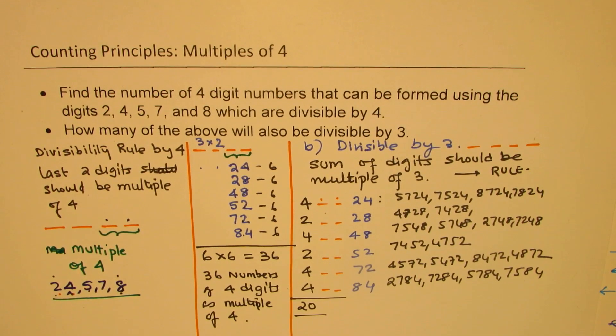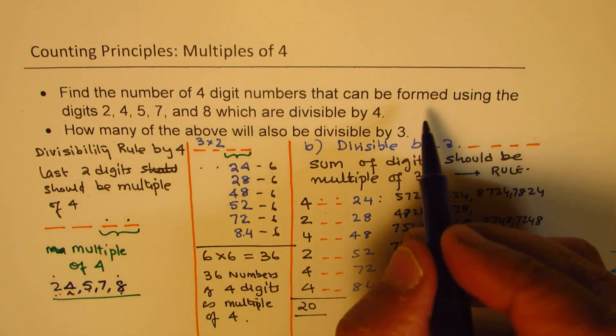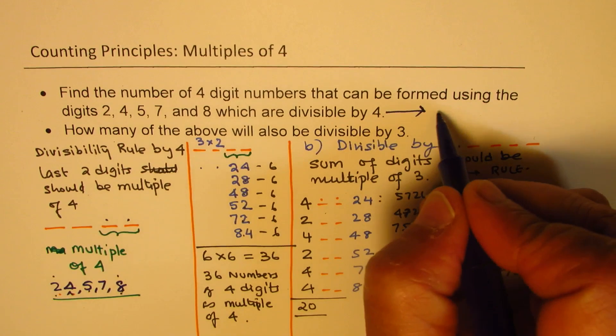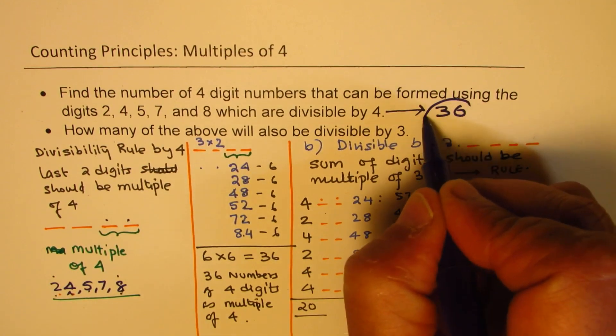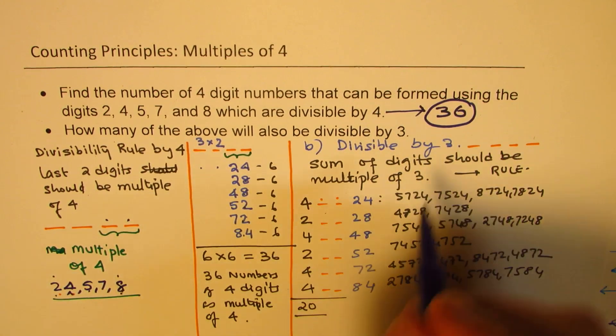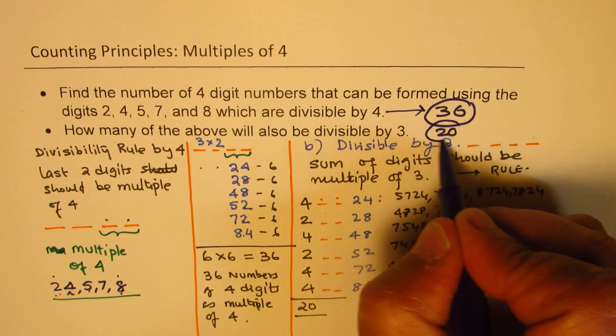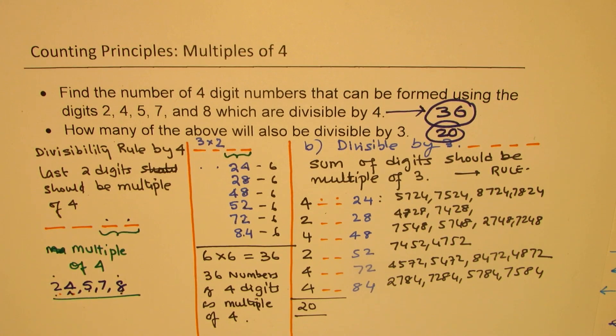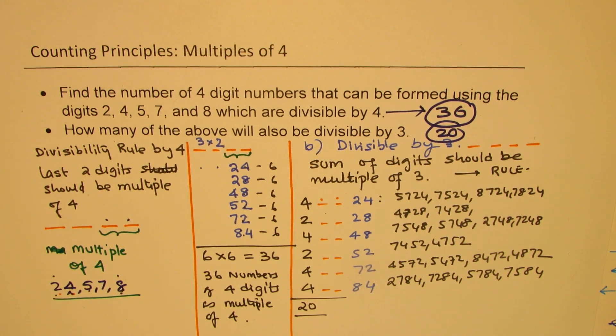So what we get is our solution. The total number of numbers which are divisible by 4 are 36. And by 3 are 20 out of those 36. So that is how we can actually solve this question. I hope the steps are absolutely clear. Feel free to write your comment, share your views, and if you like and subscribe to my videos, that'd be great. Thanks for watching and all the best.